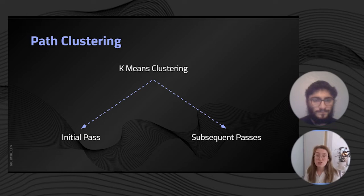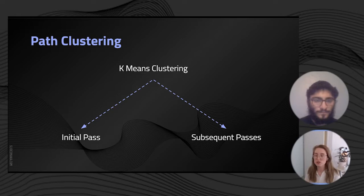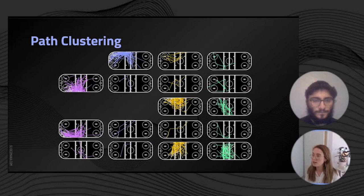First we're going to look at neutral zone passing patterns. To look at our neutral zone passing patterns, we first looked at path clustering. To do so we used a method called k-means clustering, and we clustered both the initial pass in a play sequence and also all subsequent passes in a play sequence, to develop two unique clusters that could then give us a series of events that were very similar to each other in most ways.